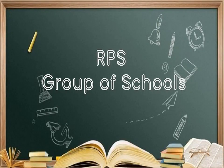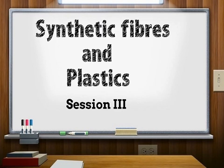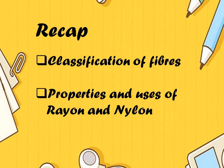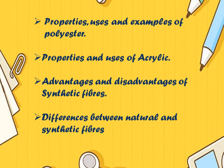Welcome to RPS Group of Schools online classes. Let us continue with our chapter Synthetic Fibers and Plastics, Session 3. In the previous class we discussed classification of fibers and studied properties and uses of rayon and nylon. Today we will study properties, uses and examples of polyester; properties and uses of acrylic; and advantages, disadvantages, and differences between natural and synthetic fibers.